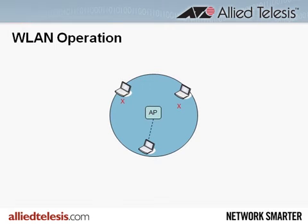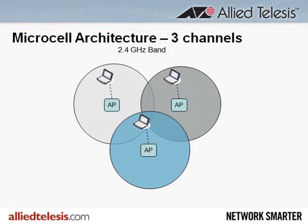Consequently, the early designers of the wireless LAN standard, 802.11, realized that to get reasonable bandwidth from a wireless LAN deployment, there must be several small cells in any given area, like this. That's why this architecture is called microcell. Each cell would operate on a different frequency, so a communication in one cell would not disrupt communication in another cell.